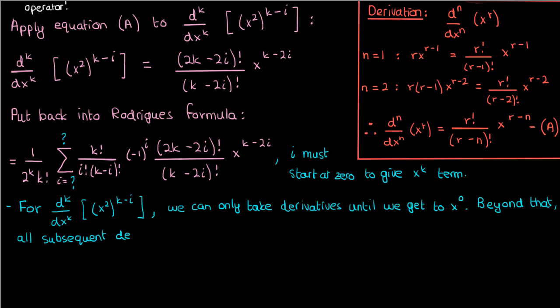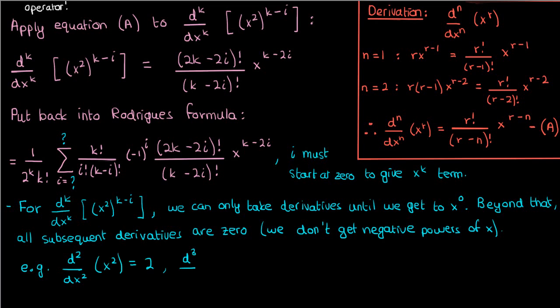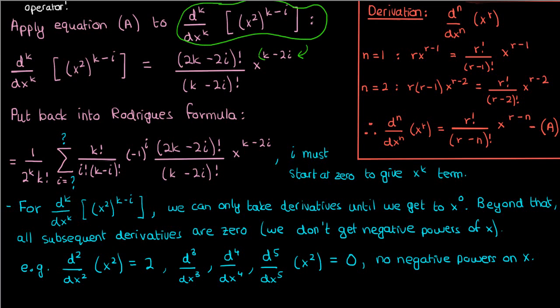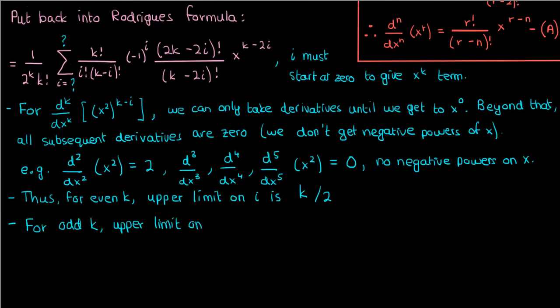Beyond x to the power 0, if we take any more derivatives, we'll keep getting 0 since the derivative of a constant like x to the power 0 is 0. We won't ever get to negative powers of x. So for example, the second derivative of x squared is 2, and if we take derivatives beyond that like the 3rd, 4th, 5th, etc., they'll all be 0. The power will never become negative on the x, and for even k the lowest it can become is x to the power 0, which is why the upper limit on i that occurs when k is even is k over 2. When k is odd the lowest is x to the power 1, which is why the upper limit on i that occurs when k is odd is k minus 1 over 2.